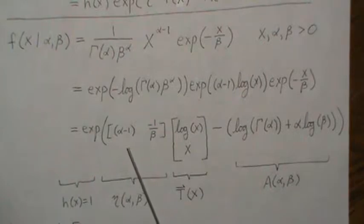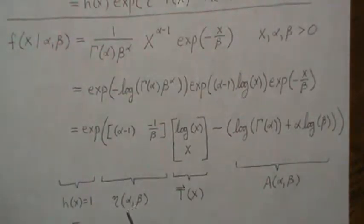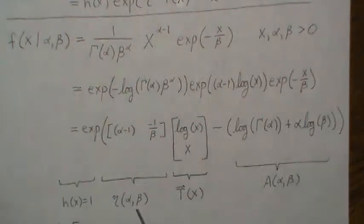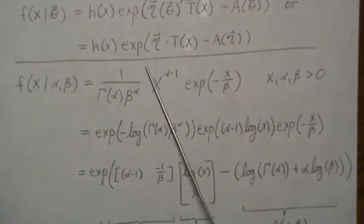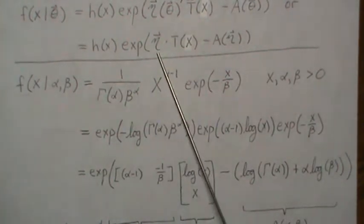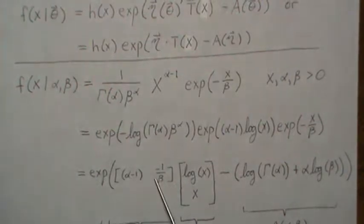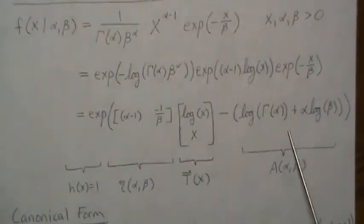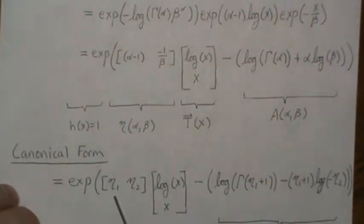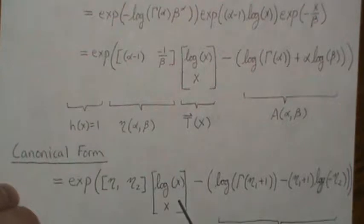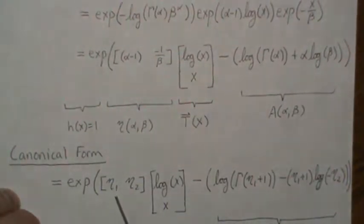Now this is in the exponential form: the function of our data is just one, the function of our parameters is eta of alpha and beta, this is our function of our data T(x), and this is our log partition. To write this in canonical form we have to treat this vector — which we just call eta-one and eta-two — and then we change accordingly. The sufficient statistics stay the same, but we have to write the log partition in terms of eta-one and eta-two.